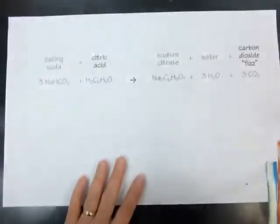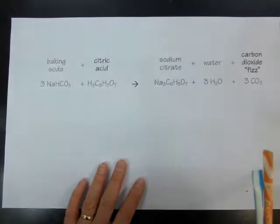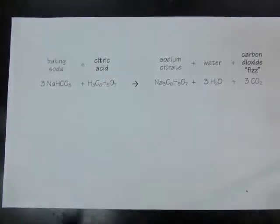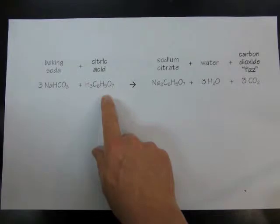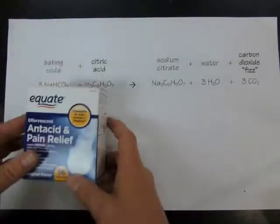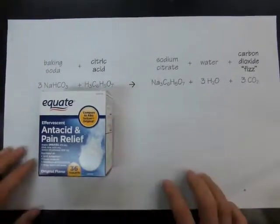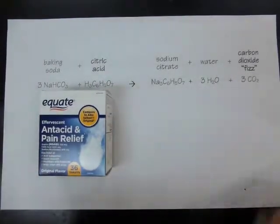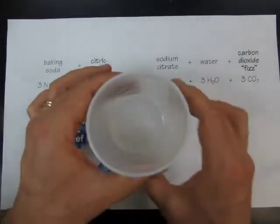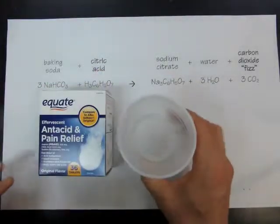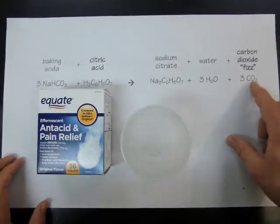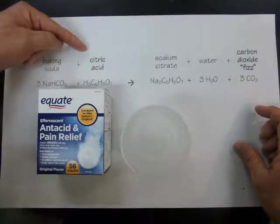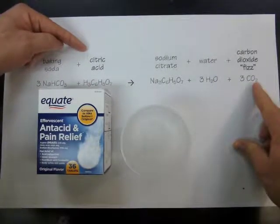To do that, we're going to use a chemical reaction. The chemical reaction is between baking soda and citric acid, which are ingredients found in antacid tablets. When you plop one of those antacid tablets in water, it starts to fizz as this reaction produces carbon dioxide. The more citric acid there is in the reaction, the more carbon dioxide is produced.